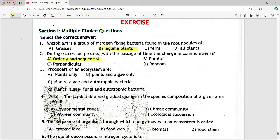Next is, producers of an ecosystem are. Options are plants only, plants and algae only, plants algae and autotrophic bacteria, plants algae fungi and autotrophic bacteria. Answer is option d, plants algae fungi and autotrophic bacteria.